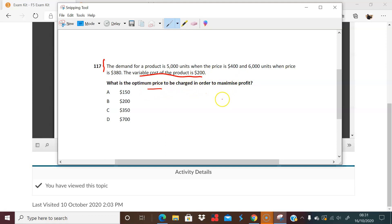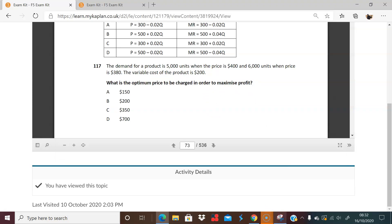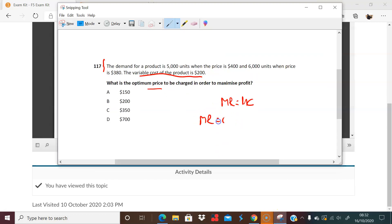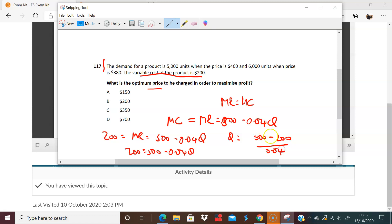So we know that optimal price happens when MR equals MC, right? And we know what MR is. We just worked that out. So we know that MR is 500 minus 0.04Q. So MR equals 500 minus 0.04Q. And we know this equals MC at the optimal point. So 200 equals 500 minus 0.04Q. And therefore Q equals, once I rearrange this, Q must equal 500 minus 200 divided by 0.04. And you plug all this in, you find that Q equals 7,500 units. So that's the number of units that we need to sell to be at optimal point.